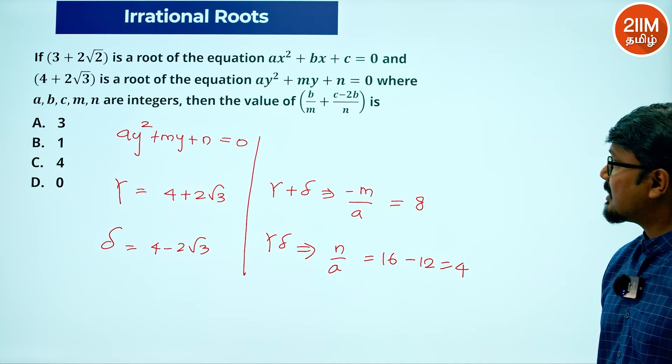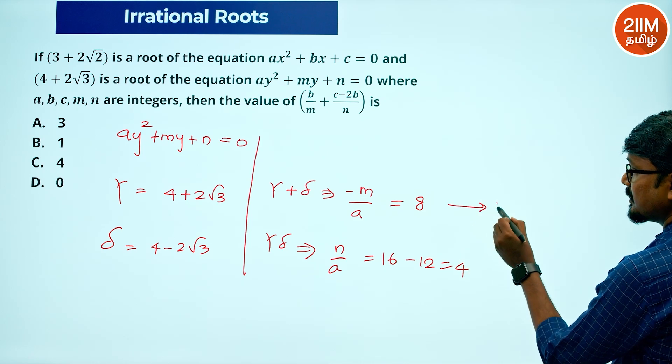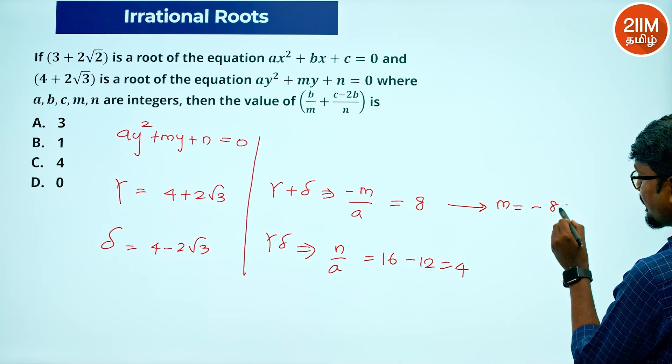So we have m and n in terms of a. This means m is equal to minus 8a, and n is equal to 4a.